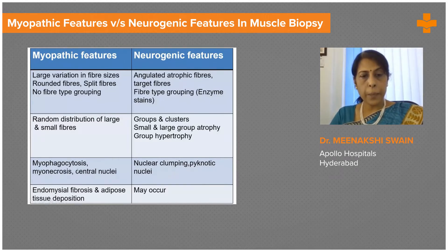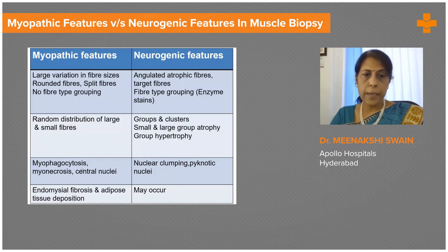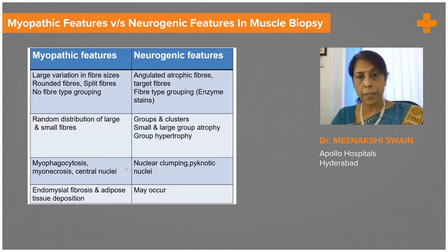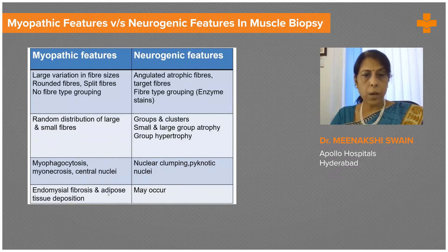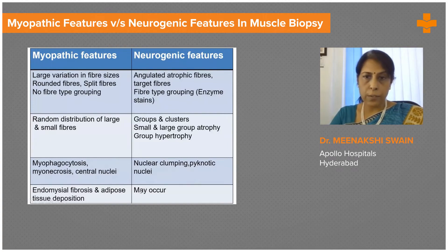Myopathic features also include central nuclei. In normal fibers, up to 2% can normally have central nuclei, but if they exceed 2–3%, that would be considered to favor a myopathic etiology. In contrast, in neurogenic atrophy, you typically have nuclear clumping and pyknotic nuclei. Endomysial fibrosis and adipose tissue infiltration are an indication of chronicity, commonly seen early in myopathic diseases but may also occur in end-stage neurogenic atrophy.